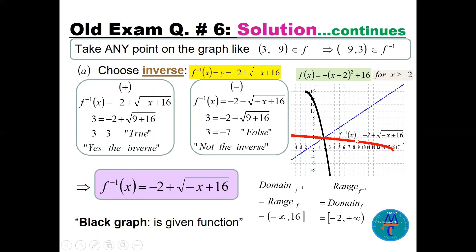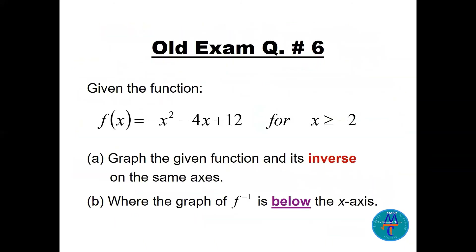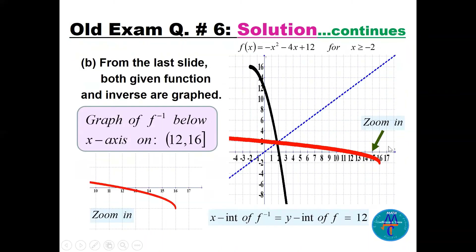The domain of the inverse is the range of f, which is (−∞, 16]. The question asks where the graph of the inverse is below the x-axis. Zooming into the graph, this occurs from x = 12 (open) to x = 16 (closed), i.e., (12, 16]. The x-intercept of the inverse corresponds to the y-intercept of f, which gives x = 12 on the inverse.